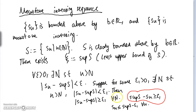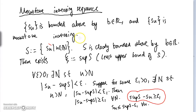So that's the proof of the monotone convergence theorem, at least for monotone increasing sequences. Now we're going to use this to prove the existence of Euler's number. Thanks for watching.